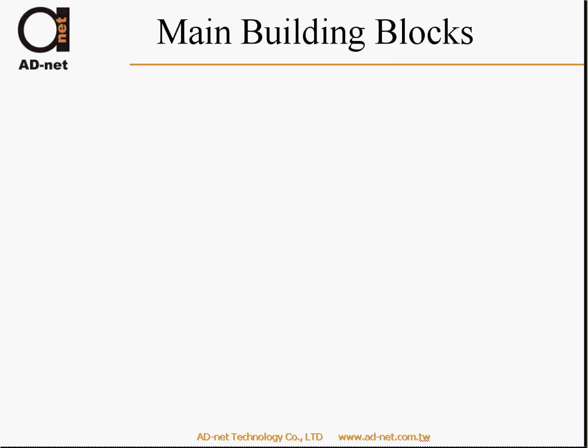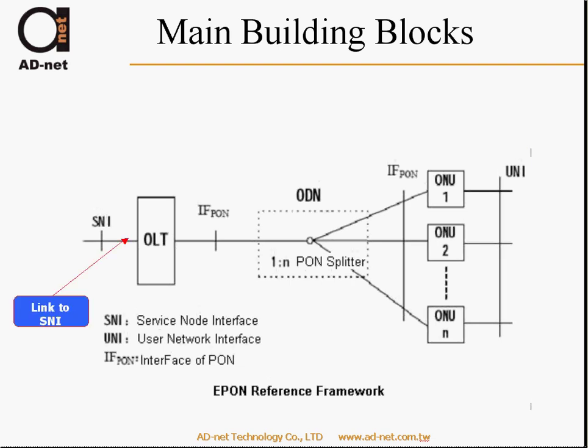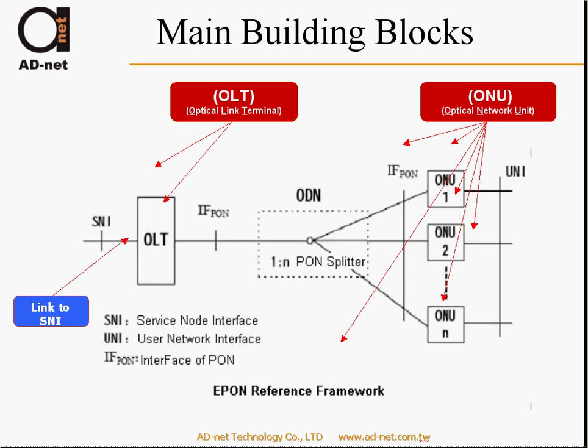Let's start with the main building blocks. What exactly are the GEPON building blocks? What does the GEPON network consist of? The GEPON network consists first of the link to Serial Node Interface, where you connect a voice network, your ISP network, or the CATV. If you offer triple play, you can have interfaces with all three networks. Next, here is the OLT, which stands for Optical Link Terminal. Here is the ONU, which stands for Optical Network Unit. Those are the two parts that actually need power.